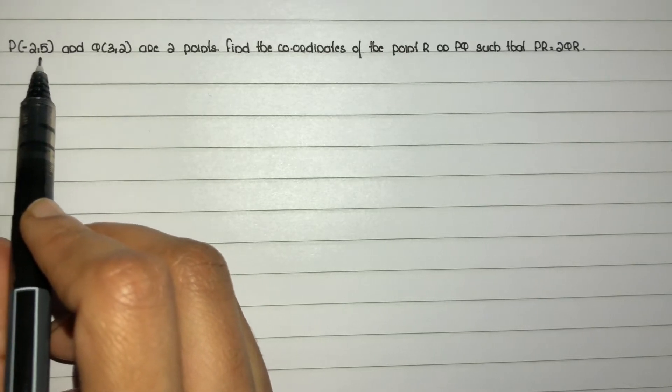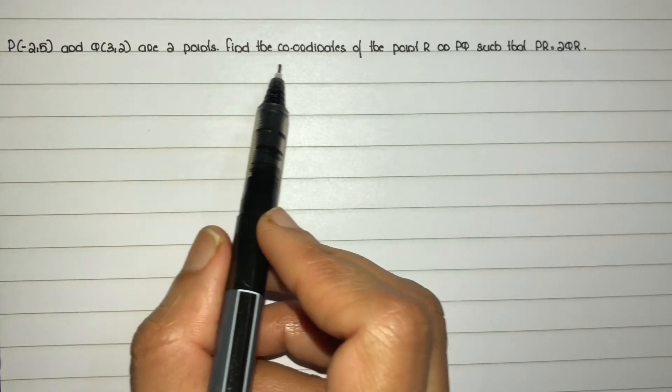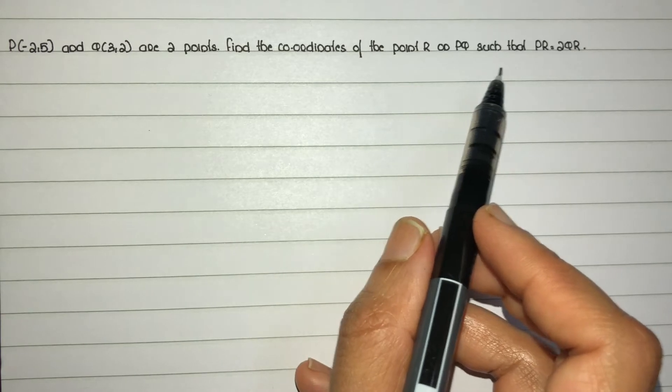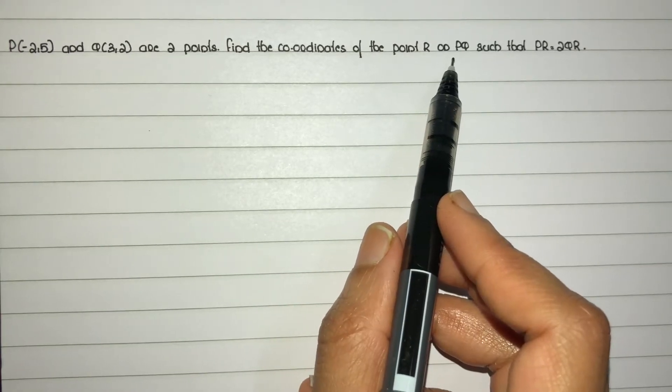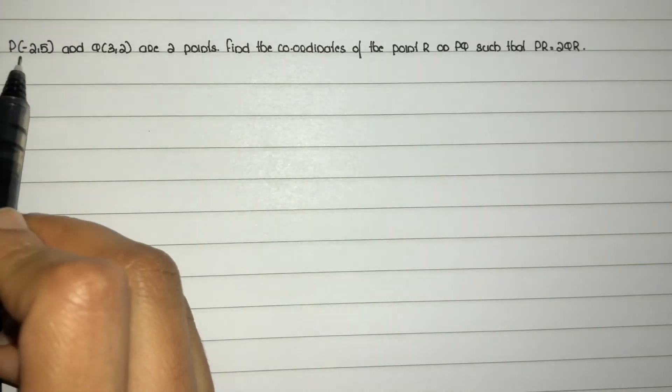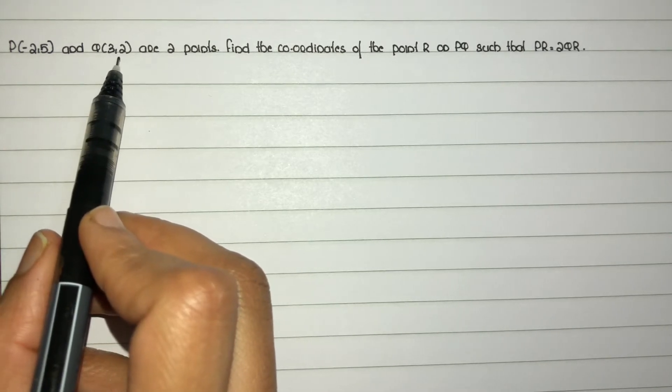P(-2,5) and Q(3,2) are two points. Find the coordinates of the point R on PQ such that PR is equal to 2QR. So first consider a line segment PQ, where P has coordinates (-2,5) and Q has coordinates (3,2).